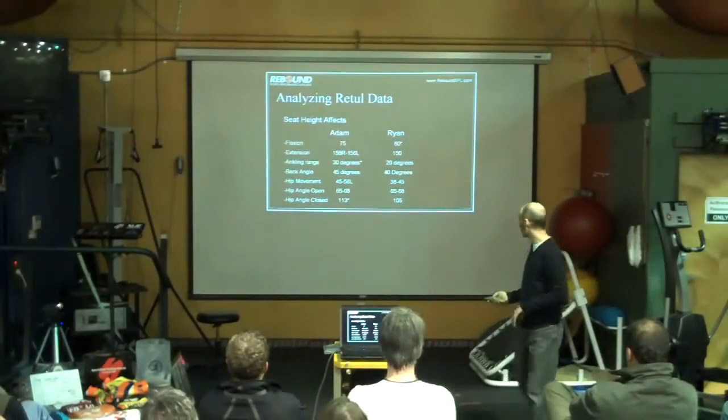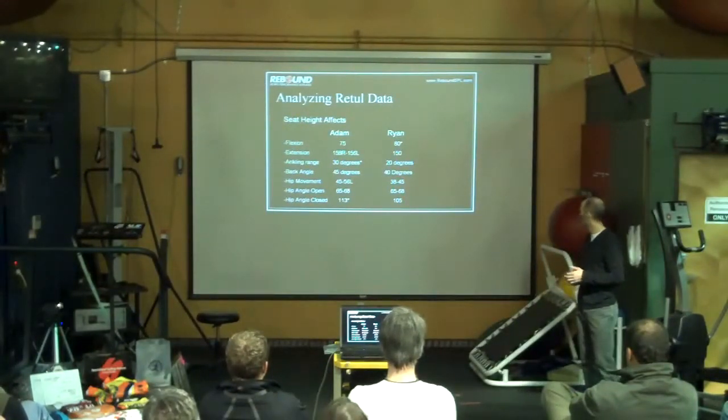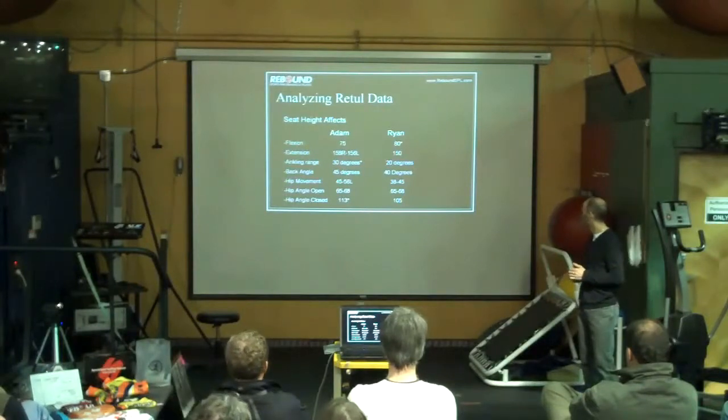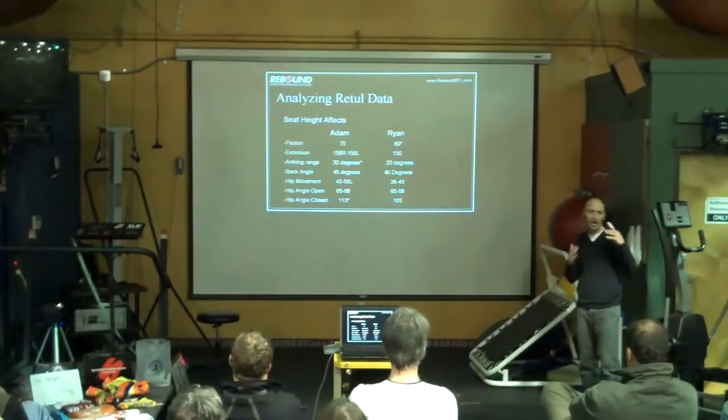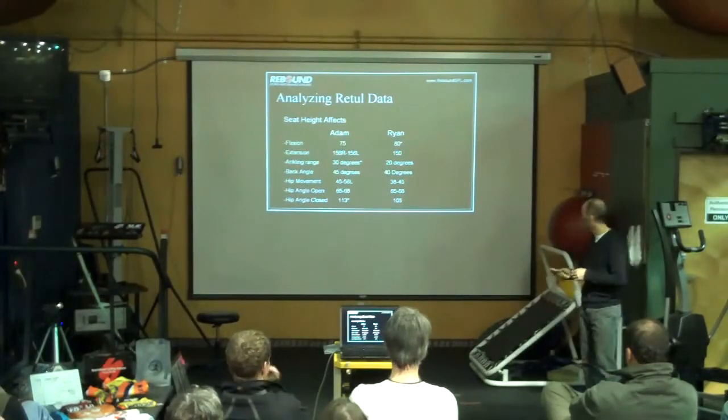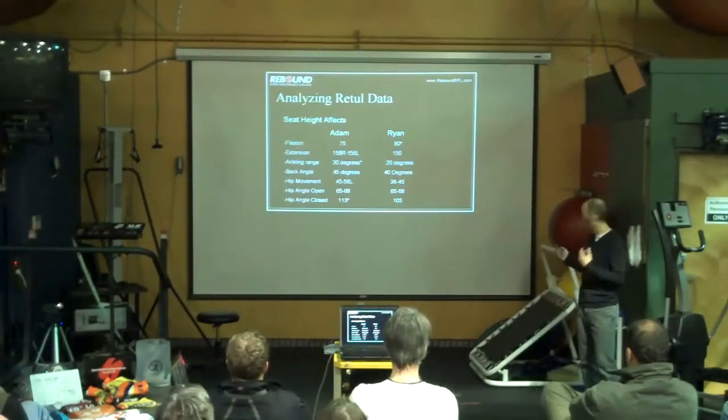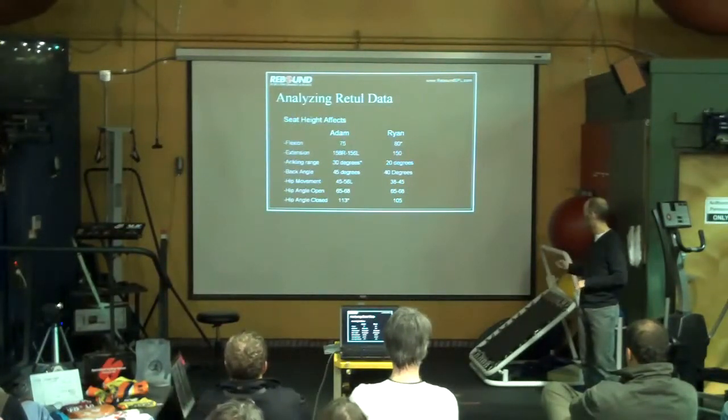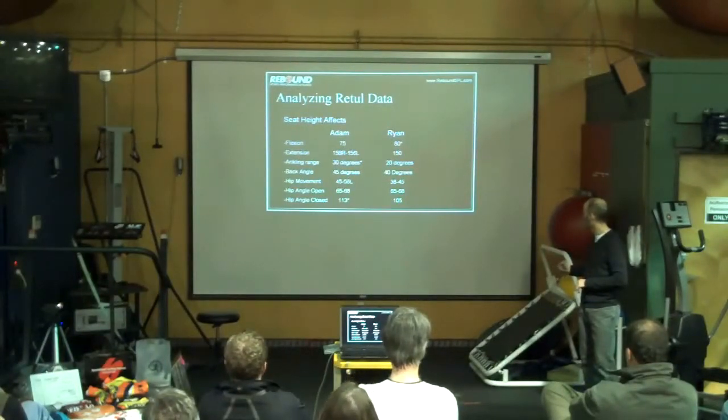So analyzing it and putting it in a form where you guys can actually see and point out some of the key things that become of interest here. Your seat height affects a lot of different things, and with the Retool, we get all this. This is one data set that we get here, so we're looking at flexion. At the top of the pedal stroke, how closed down is that knee getting? There's a little bit of difference here. 75-8, that doesn't seem great. I'm going to come back to that for a minute and show you why. That's pretty special here for Ryan.